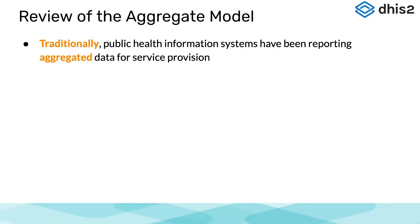Let's start with the aggregate model in DHIS2. DHIS2 started off as a way to collect public health information in the 90s. Traditionally, the collected data were aggregated. The numbers would often be a result of manual counting in paper files put into a data collection form, and then submitted into DHIS2 to be aggregated, analyzed, and used for reports.